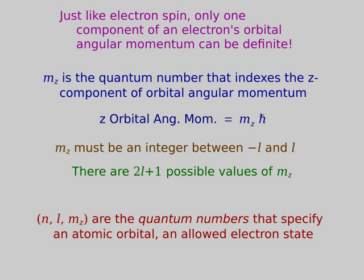Together, N, L, and M-z are the quantum numbers that specify an atomic orbital. N is the principal quantum number — it tells you the overall energy level. L tells you the total orbital angular momentum and whether it's an S, P, or D orbital: L equals zero is S, L equals one is P, L equals two is D. And then M-z. You tell me those three numbers and you can figure out what state the electron is in, its energy, its total orbital angular momentum, and the z-component of angular momentum. N, L, M are just numbers, but they index allowed states — ways of counting and labeling which state is which.